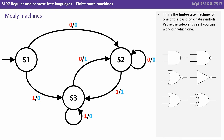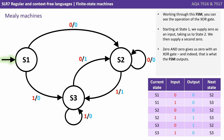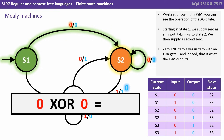This is the finite state machine for one of the basic logic gate symbols. Pause the video and see if you can work out which one by following the logic of the diagram through. So this finite state machine represents an exclusive OR or XOR gate. As a reminder, an XOR gate gives an output of one or true if one and only one of the two inputs are one or true. Working through this finite state machine you can see the operation of the XOR gate. Starting at state one, we supply zero as an input, taking us to state two. We then supply a second zero. Zero and zero gives us zero with an XOR gate, and indeed, that is what the finite state machine outputs.